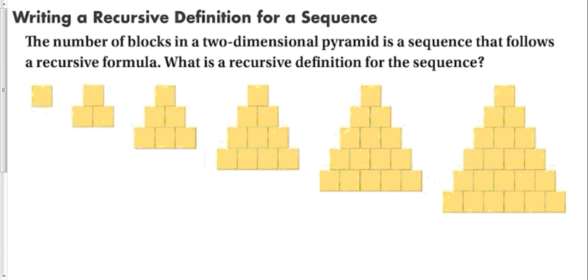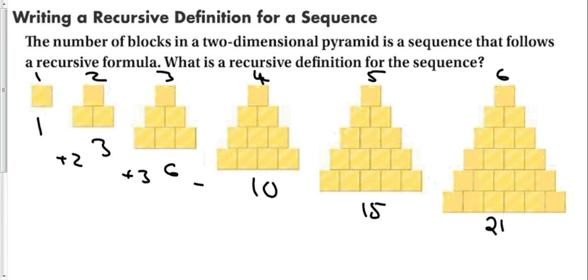So let's make a recursive sequence for this. This is term 1, 2, 3, 4, 5, and 6. So how many blocks are in each thing? 1, 3, 6, 10, 15, and 21. So to make a recursive formula we have to see how we're getting from one term to the next. From here we're adding 2, then 3, then 4, then 5, then 6. Now the trick is to make a formula for it.